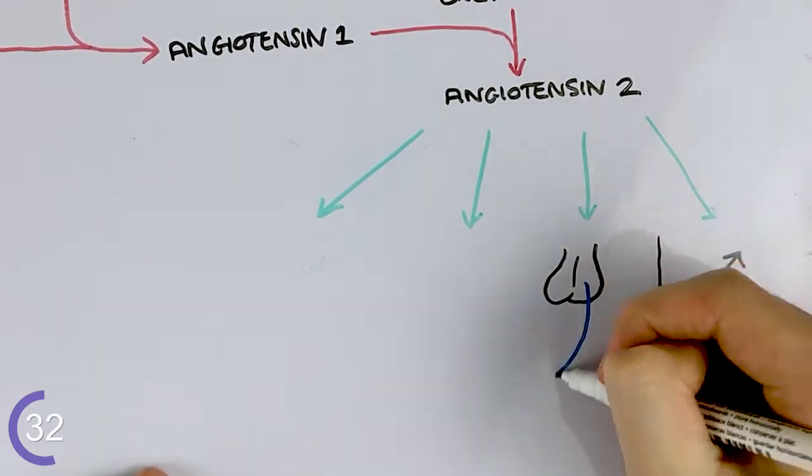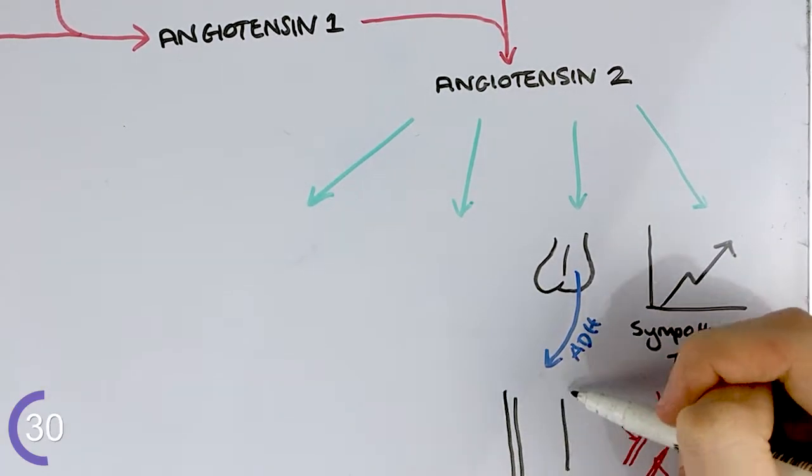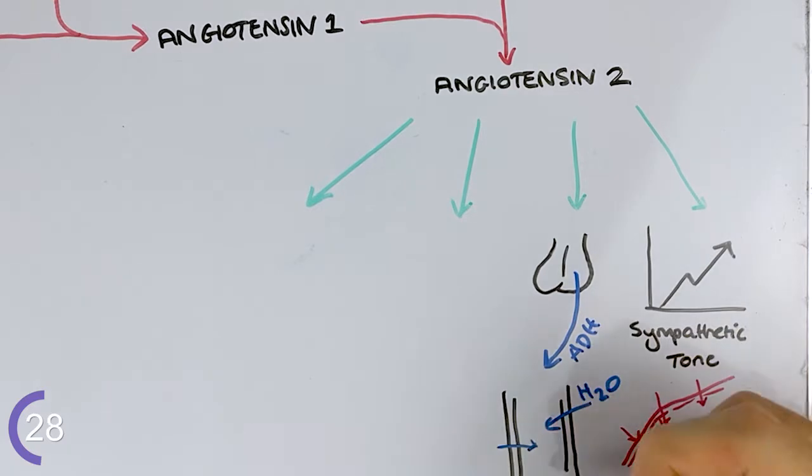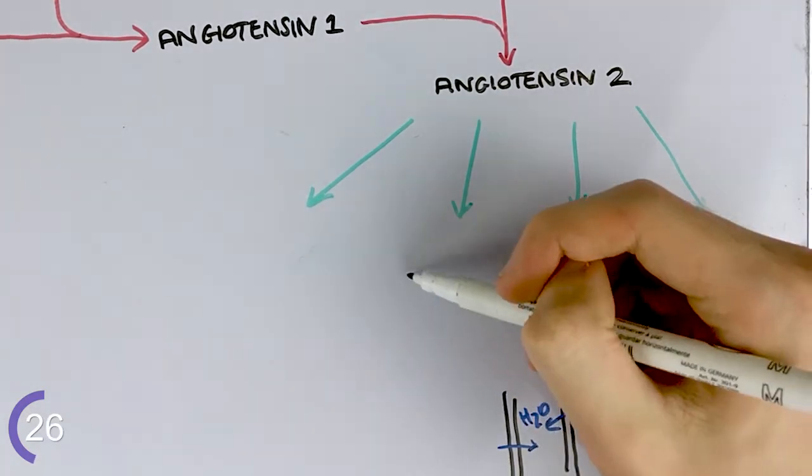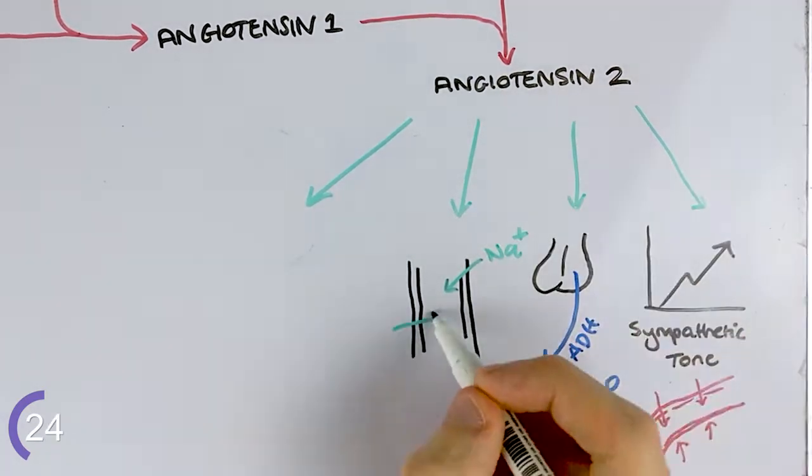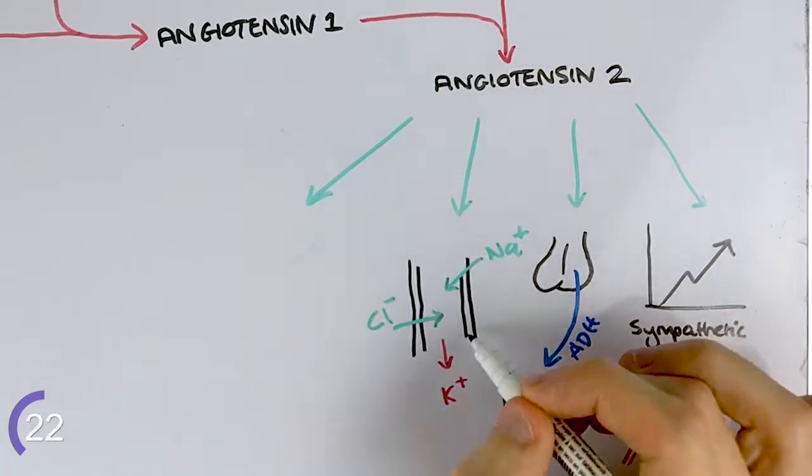Next, it causes release of antidiuretic hormone from the posterior pituitary in turn, leading to increased water resorption in the collecting ducts. The third effect is sodium and chloride uptake from the tubules to retain water and increase blood volume.